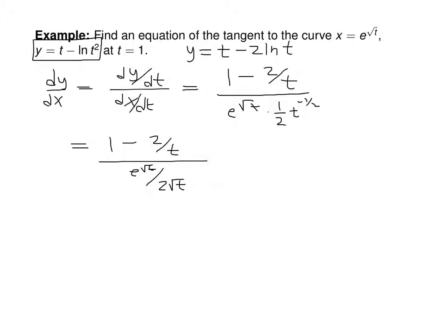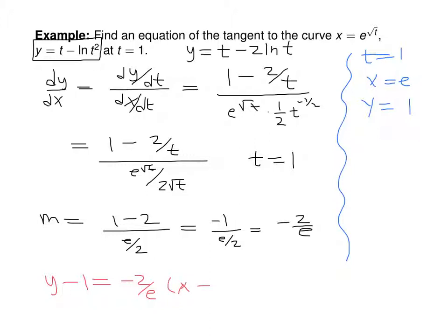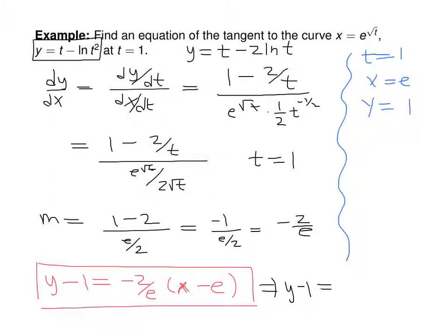Plugging in t = 1, the slope is (1 − 2)/(e/2) = −1/(e/2) = −2/e. To find the equation of the tangent line, we also find x and y at t = 1: x = e and y = 1. So the tangent line is y − 1 = (−2/e)(x − e), which in slope-intercept form is y = (−2/e)x + 3.